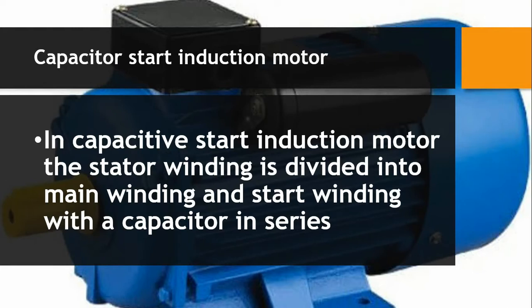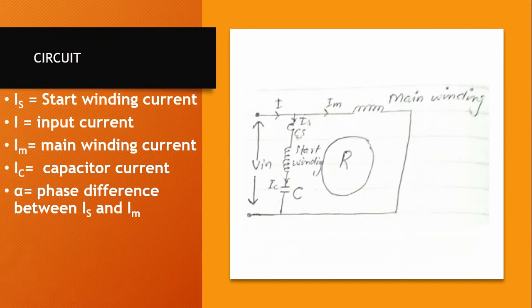The next type of single phase induction motor is the capacitor start induction motor. In the capacitor start induction motor, the stator winding is divided into main winding and starter winding, but there is an addition: a capacitor is connected in series with the starter winding, as you can see in this picture.